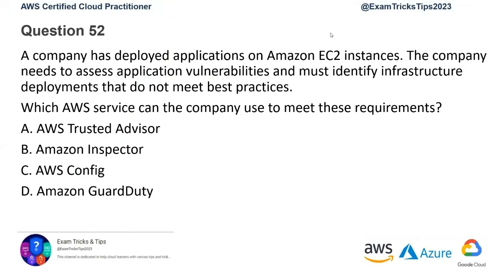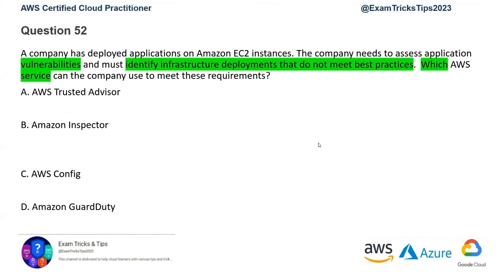Question number 52. A company has deployed applications on Amazon EC2 instances. The company needs to assess application vulnerabilities and must identify infrastructure deployments that do not meet best practices. This is a very easy question — we've covered similar questions in previous episodes. Essentially, we need a service that identifies vulnerabilities. The first option is AWS Trusted Advisor. We know it's an advisory service about security, reliability, and performance of your AWS infrastructure. It will tell you if anything is not correct, but it doesn't look at vulnerabilities specifically. So this is not a correct answer.